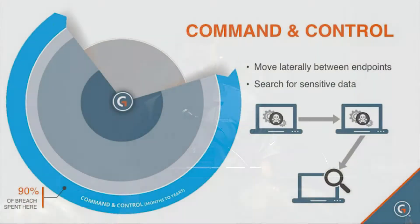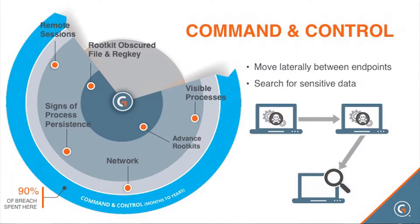Now in command and control, one endpoint is owned. The next most common activity is lateral movement. The bad actor wants to get onto more and more endpoints, get closer to valuable assets, maybe access the domain controller to get escalated privileges. Command and control lasts many, many months and lateral movement is one of the big activities during that phase. That's why the C2 slice is so big on the circle — 90% of the time. Most breaches take over a year. It's not just moving laterally for privileges; it's also searching for data.